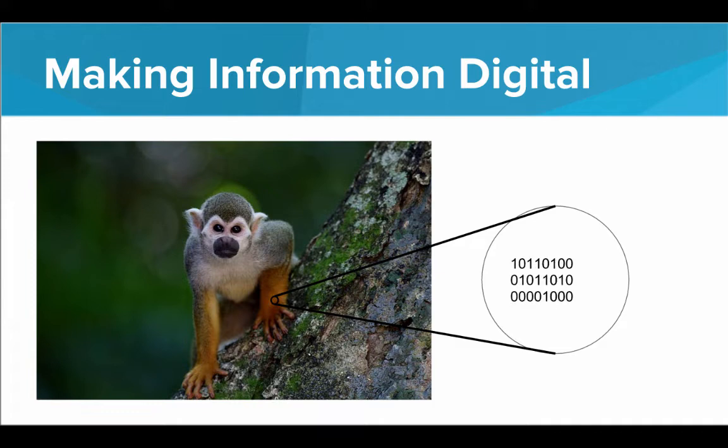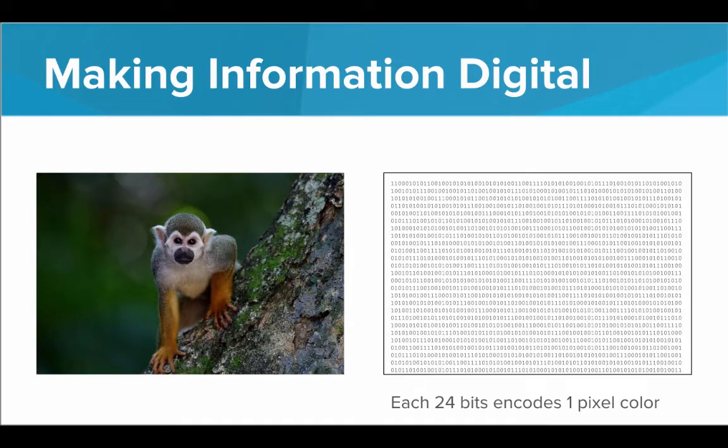Each of those values can be represented using eight binary digits. And so we have the first eight bits representing the red, the next eight the green, and the final eight the blue. And from that we have a 24-bit pixel. And from there we can make an entire image where each 24 bits encodes one pixel color.